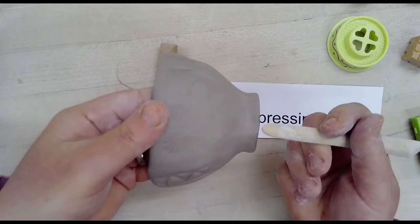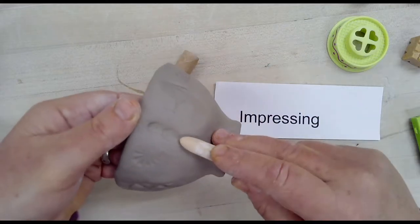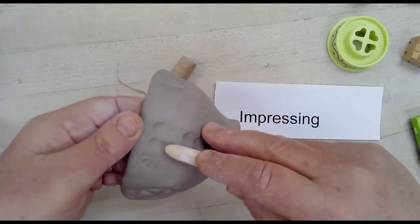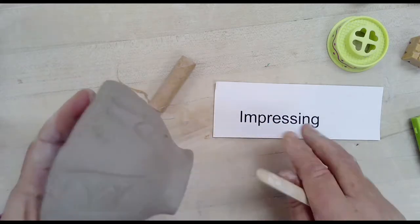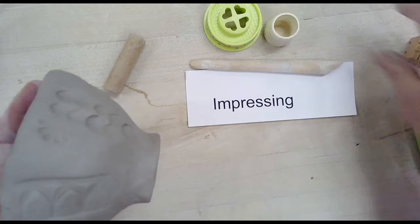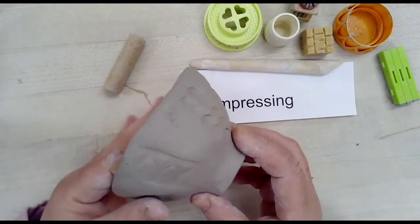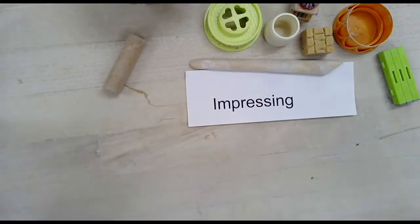Even a wooden modeling tool, which we have lots of different shapes and sizes, pressed into your bowl will also leave an interesting stamped texture. This is just a repeated stamping to create a pattern. You can explore our bin of textured objects and see what you can do with that.